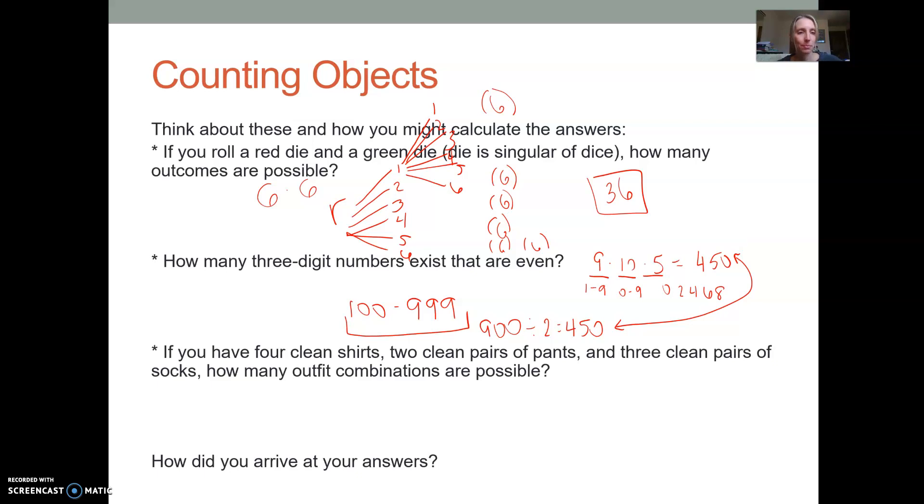Our last example, if you have four clean shirts, two clean pairs of pants and three clean pairs of socks, how many outfit combinations are possible? So for shirts, you have four options. For pants, you have two. And then for socks, you have three.